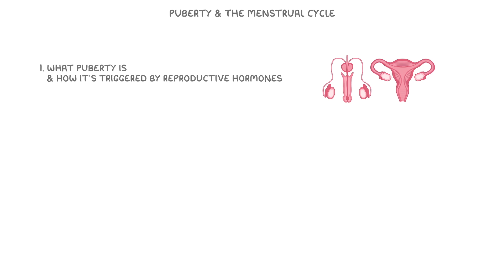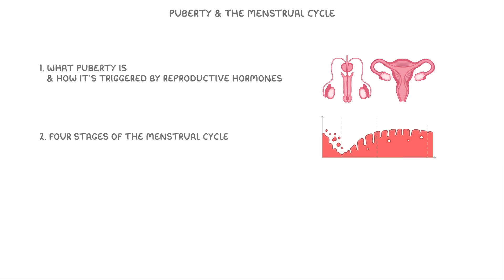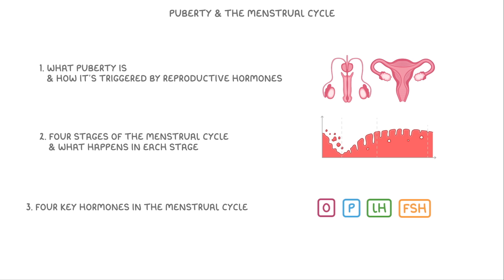In this video we'll be learning about puberty and the menstrual cycle. We'll cover what puberty is and how it's triggered by reproductive hormones, the four stages of the menstrual cycle and what happens at each stage, and finally the four key hormones involved in the menstrual cycle and how they interact with each other.